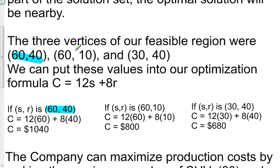If s and r is equal to 60, 10, then 12 times 60 plus 8 times 10 yields $800 for our production cost.